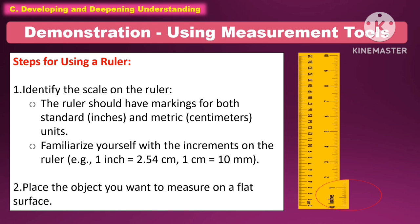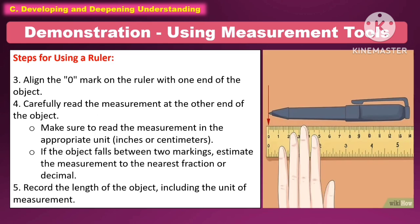The following are the steps for using a ruler. First, identify the scale on the ruler — it should have markings for both standard inches and metric centimeters, and familiarize yourself with the increments. Second, place the object on a flat surface. Third, align the zero mark with one end of the object. Fourth, read the measurement at the other end in the appropriate unit. If the object falls between two markings, estimate to the nearest fraction or decimal. Finally, record the length including the unit of measurement.